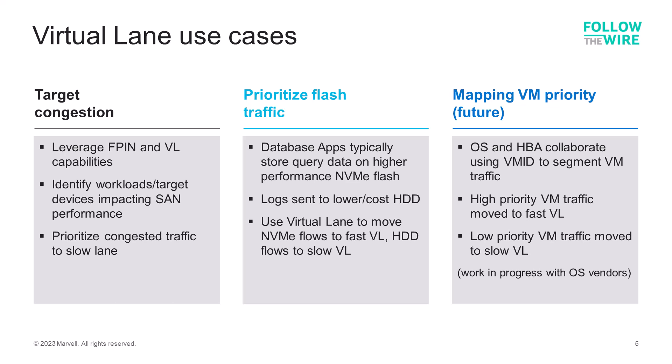There are several use cases for virtual lane technology. The first is in the case of target congestion — using the fabric performance impact notifications, the HBA and switch can work in conjunction to identify slow devices or workloads and quarantine that traffic to the slow lane. For database applications, high-priority query data and low-priority log data can be segmented. Query data is typically routed to flash storage, whereas log data is sent to lower-cost, slower HDD storage. Virtual lanes can be used to prioritize these flows accordingly.